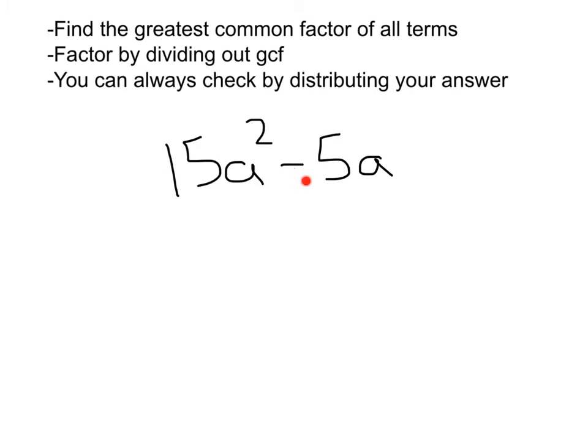How about 15a squared minus 5a? First, what is in common between 15a squared and 5a? Well I can see that we've got a 5 between the 15 and the 5, and then a squared and a both have an a in common. That's going to leave us with 3a minus 1.